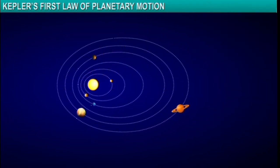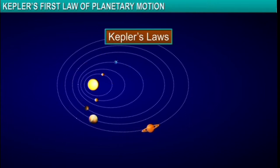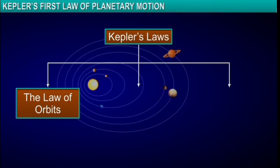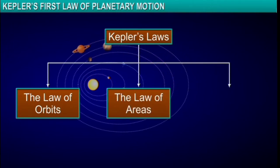Based on his observations, Kepler propounded three laws of planetary motion known as Kepler's laws: the law of orbits, the law of areas, and the law of periods.